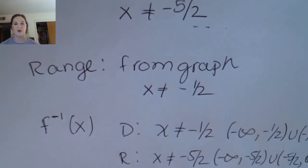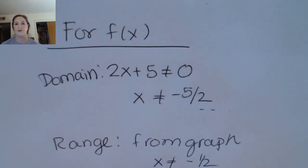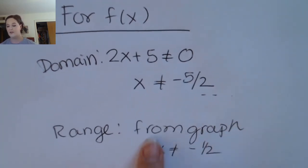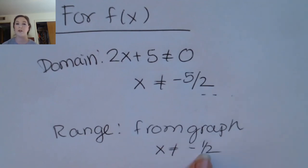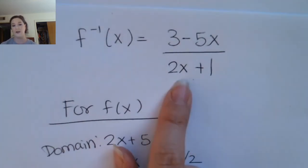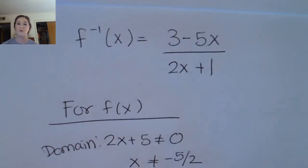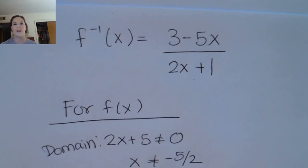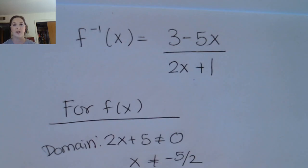The domain and range are actually switched between a function and its inverse. This can be helpful if you don't know the range of your function — you can find the inverse, find its domain, and that gives you the range of the original. Since it's easier to figure out domain than range, I hope this refreshed your memory about inverse functions. If it's not enough, let me know — I have additional videos, and I'll see you very soon.